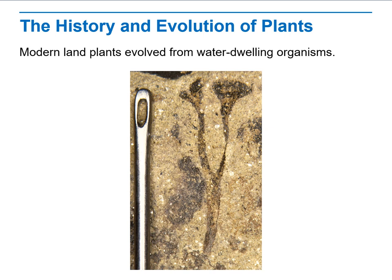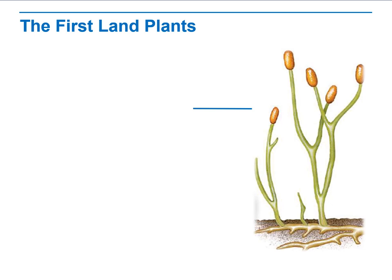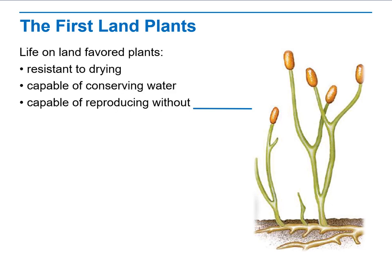Regarding the history and evolution of plants: modern land plants evolved from water-dwelling organisms, meaning plants originally were very simple organisms needing only a short stem to transfer water from the surrounding soil. The first land plants needed resistance to dryness, the capability of conserving water, and the capability of reproducing without needing water — these are the key adaptations for life on land.